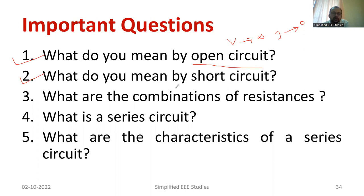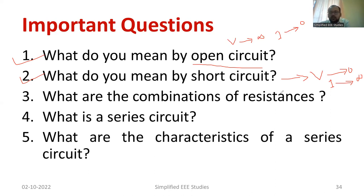What do you mean by short circuit? In case of short circuit, the voltage is zero and the current is infinity. This is called short circuit condition. Short circuit is nothing but when two conductors are crossed or connected to each other. You must have seen during lightning and thundering, some cases where two conductors cross each other at the electric pole — that is referred to as short circuit.